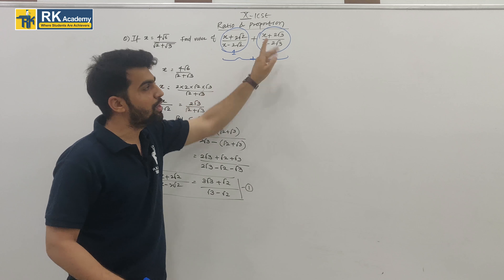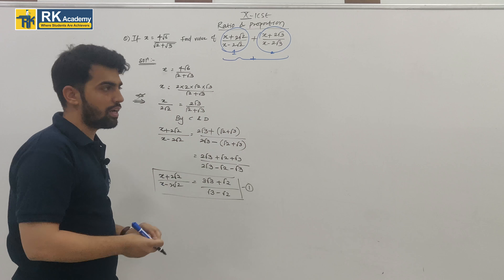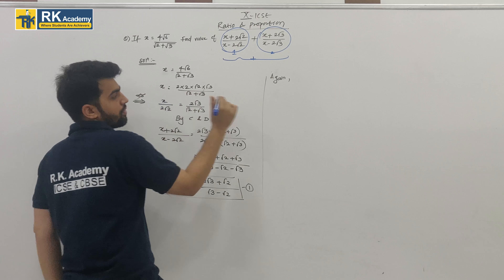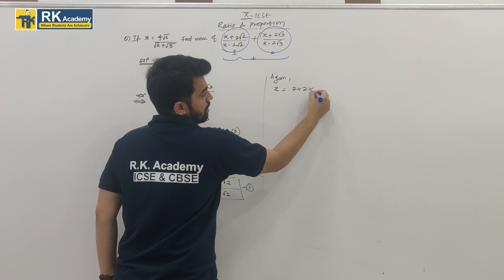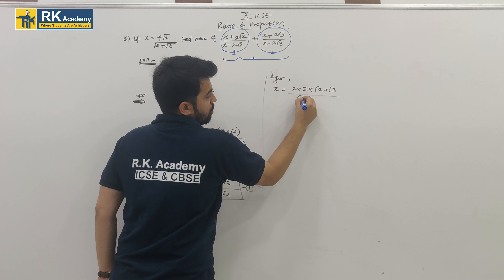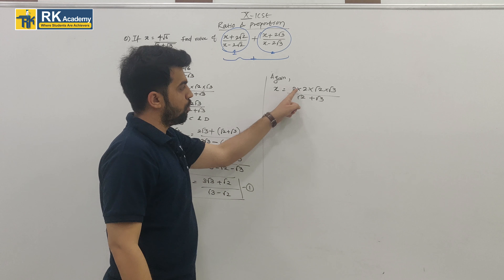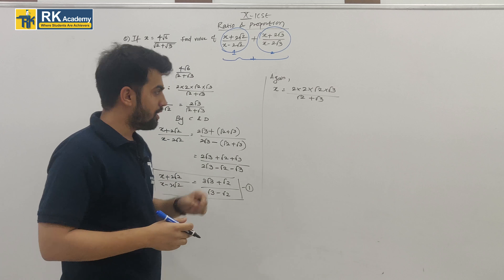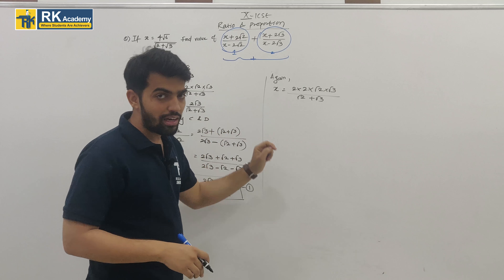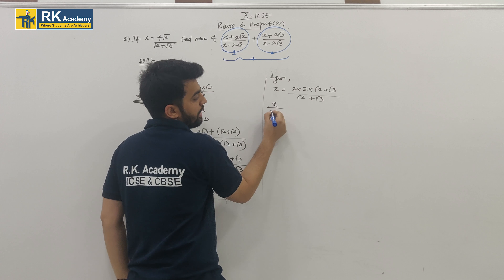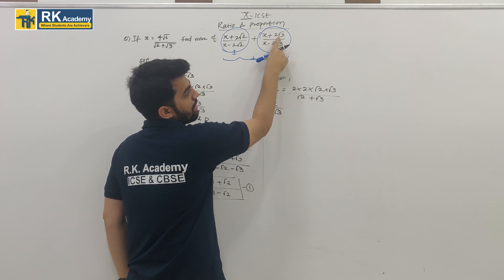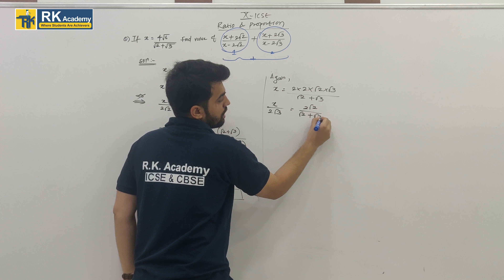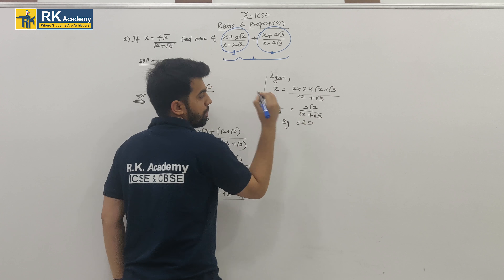Now let's find the value of the second term. We go back to x = 4√6 / (√2 + √3), which we had already factorized. This time, from the right-hand side, I will bring 2√3 to the left side. So x/(2√3) = 2√2 / (√2 + √3). Now apply componendo and dividendo again.